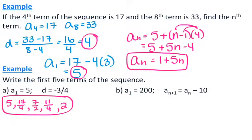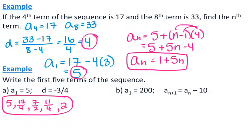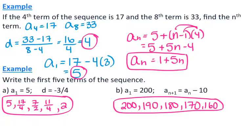For letter B, the sequence is written recursively. The first term is 200, and the notation means you find the next term using the previous term minus 10 — so minus 10 represents the common difference. Starting at 200 and subtracting 10 each time gives: 200, 190, 180, 170, 160. Letter B is just written recursively while letter A gives the information directly.